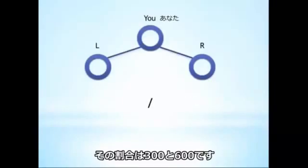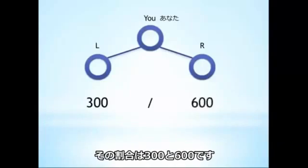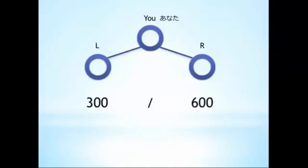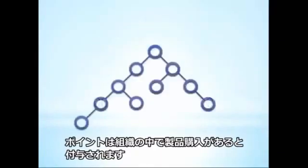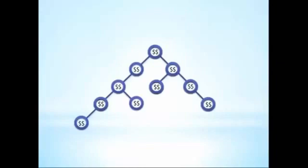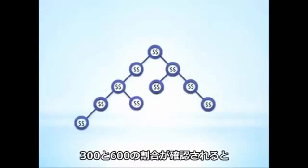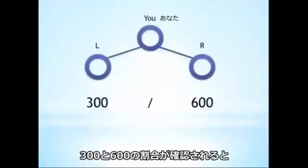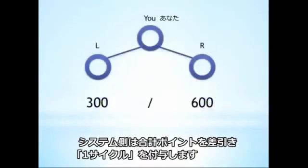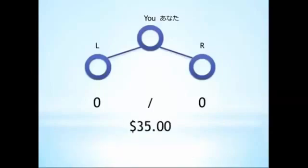That ratio is 300 points on one side of the organization and 600 points on the other — and it works the other way too. Points are earned as products are purchased by people in the network. Anytime it's possible to satisfy the ratio, the computer will deduct that volume and credit you with one cycle.